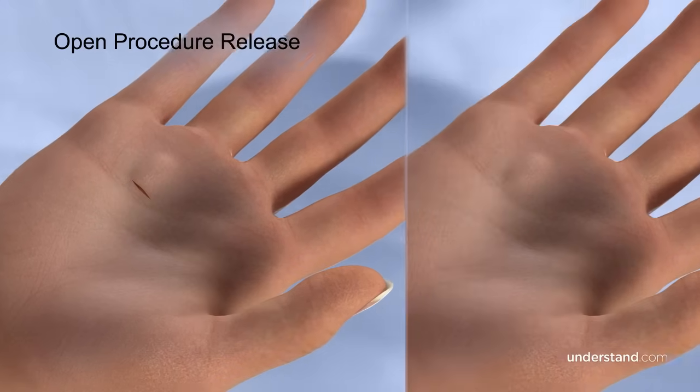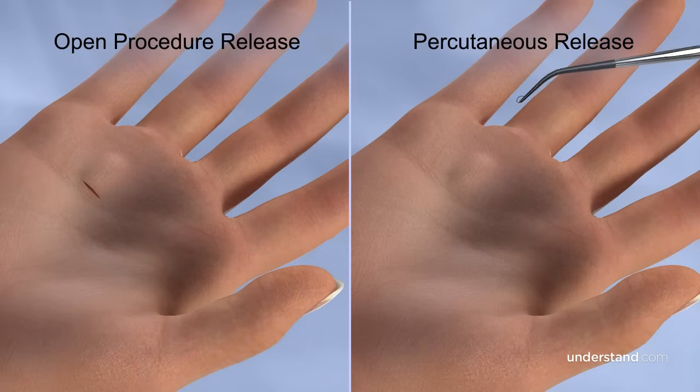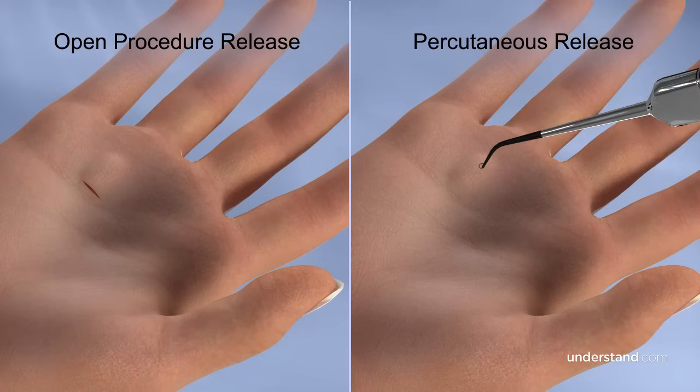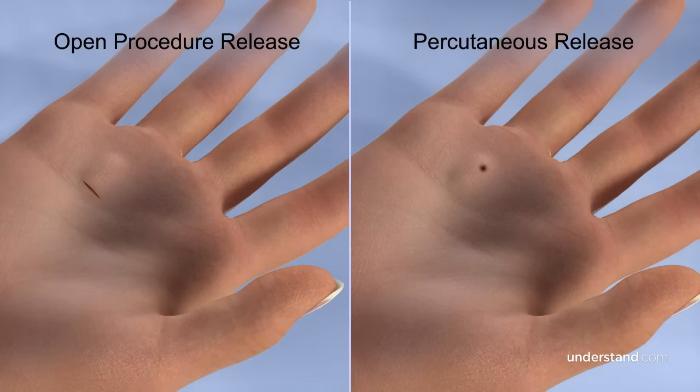An alternate method to release the A1 pulley is known as a percutaneous release. In this procedure, either a small needle or small needle-like device is inserted into the skin and used to sever the A1 pulley. This method is not appropriate for all patients and your surgeon will recommend the procedure that's best suited for your specific condition.